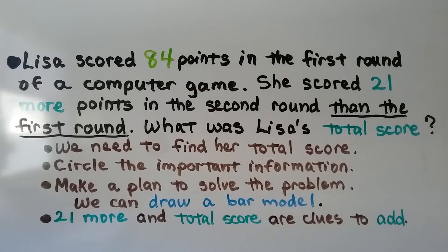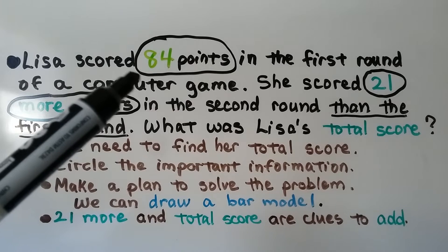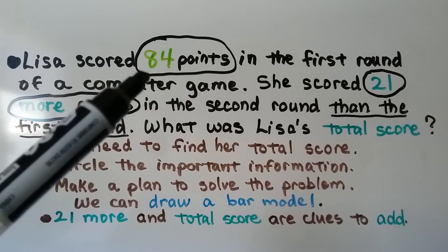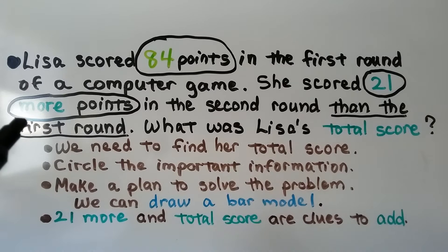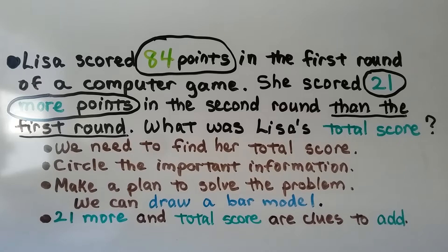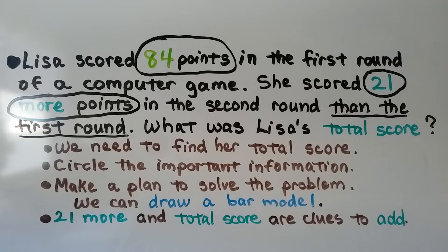We circle the important information: she scored 84 points in the first round and 21 more points in the second round. We make a plan to solve the problem. We can draw a bar model, and clue words like '21 more' and 'total score' tell us to add, so our operation is going to be addition.